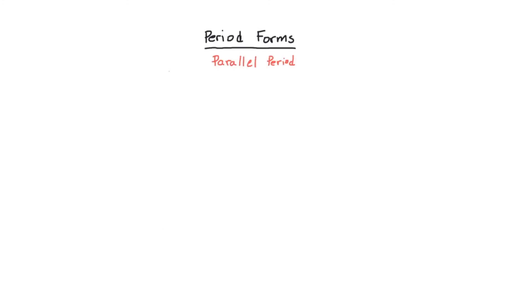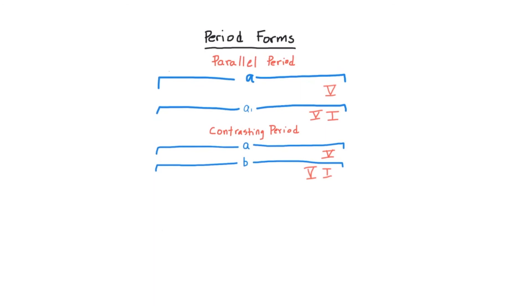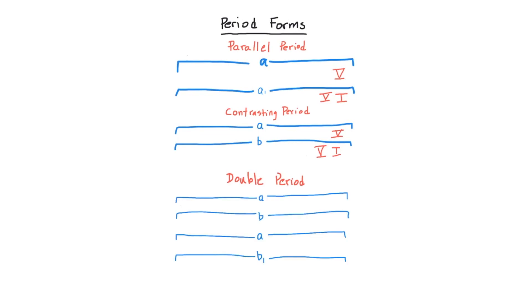To summarize, there are three types of period forms. The parallel period consists of two phrases, an A and A prime, where the two phrases are very similar to each other, if not identical. The main difference is in the cadence, where the first phrase ends with a five — a question — and the second phrase ends with an authentic cadence — an answer. The contrasting period has an A phrase followed by a B phrase, and the two phrases are significantly different from one another, with the same question-and-answer cadence structure. The double period consists of four phrases, typically in A, B, A, B prime, where the first, second, and third phrases end as questions, and the final phrase ends as an answer.